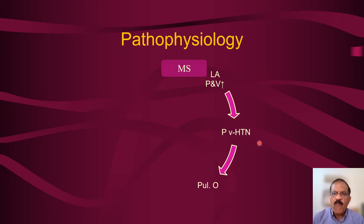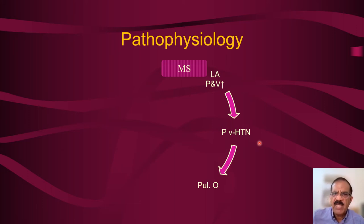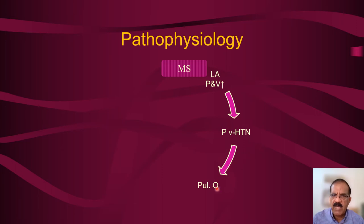The pulmonary capillaries are very delicate structures that can sustain only a certain pressure — the maximum is about 30 mmHg. Once pressure exceeds that, fluid oozes out into the interstitium and then into the alveoli — this condition is called pulmonary edema. The patient develops severe dyspnea. Many patients with mitral stenosis first present to the hospital only when they develop pulmonary edema.